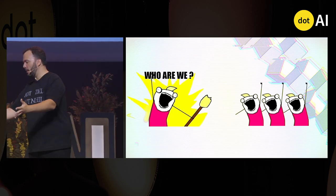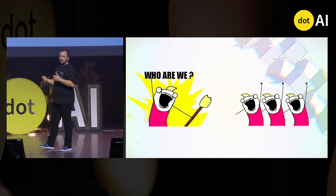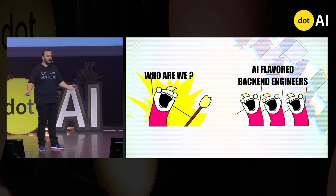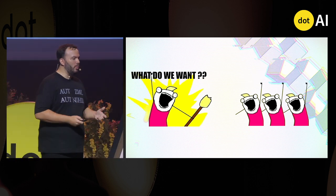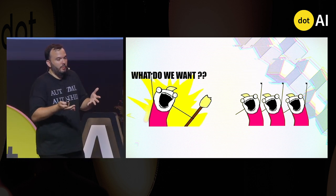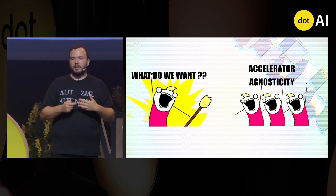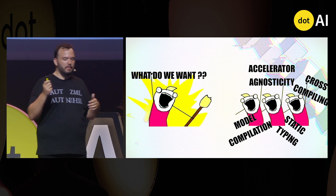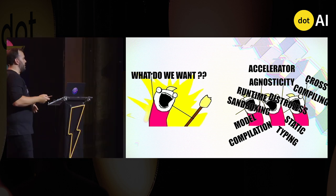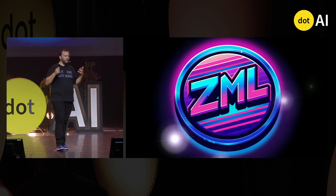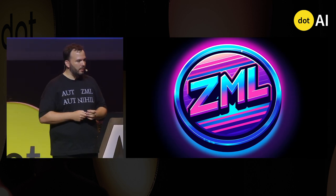So, who are we? We are AI-flavored backend engineers. We run these systems at scale. And what do we want? We want to be able to run them on any accelerator. But also we want compilation, static typing, sandboxing, Kubernetes, and so on.